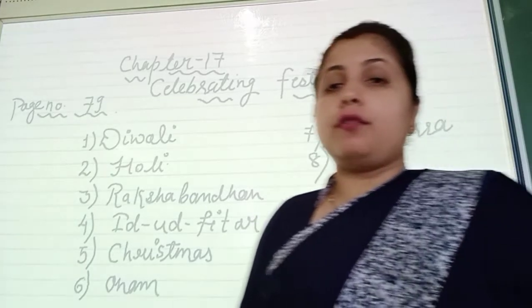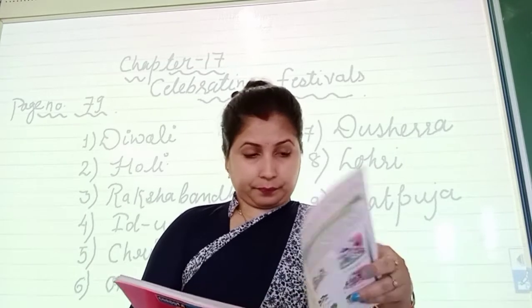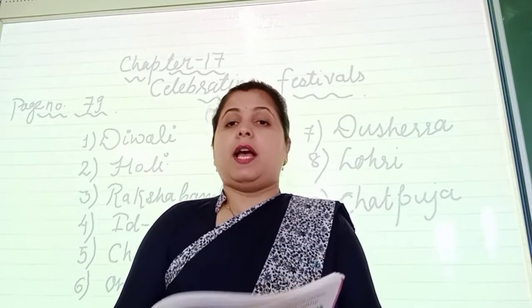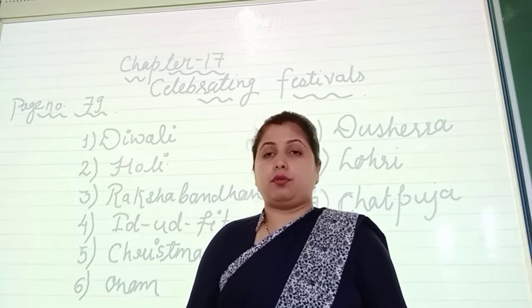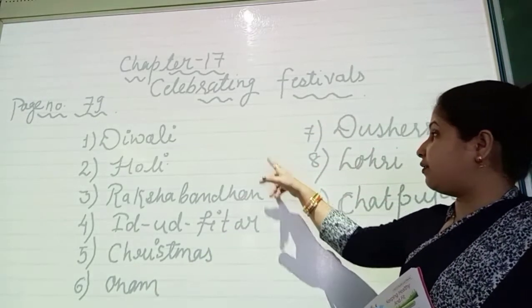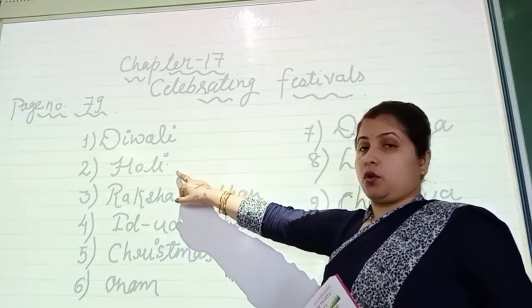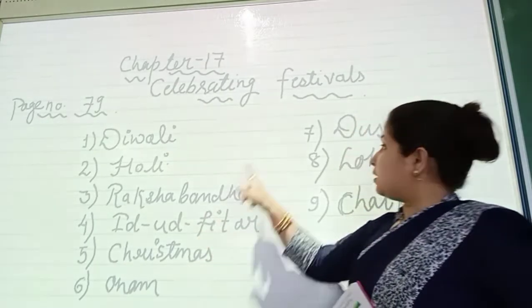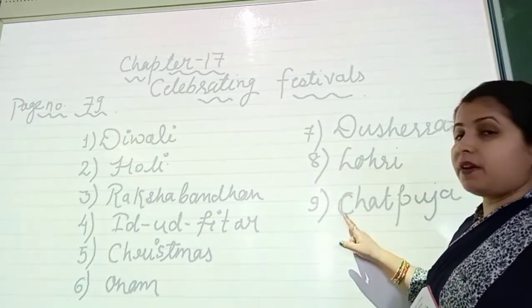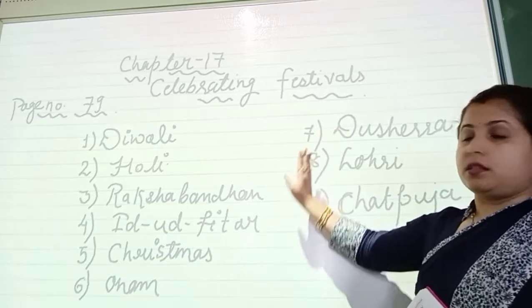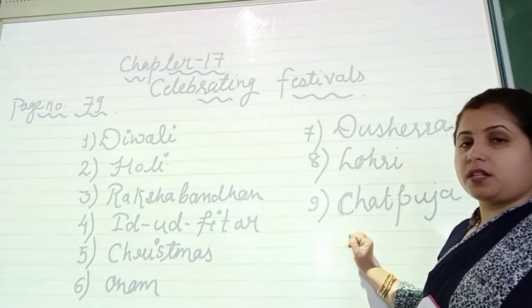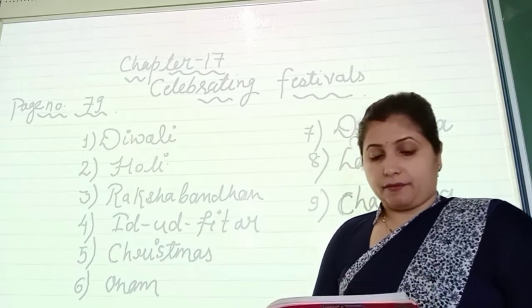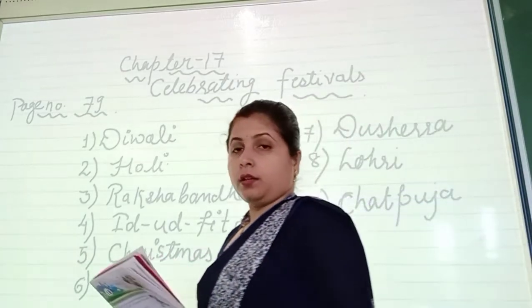Now all of you open page number 82 — the exercise of the chapter. First, everyone write the nine festivals: one Diwali, two Holi, three Raksha Bandhan, four Eid ul-Fitr, five Christmas, six Onam, seven Dussehra, eight Lohri, and ninth Chhath Puja. See the spellings and write them correctly. After completing page number 79, all of you open page number 82 for the exercise of the chapter.